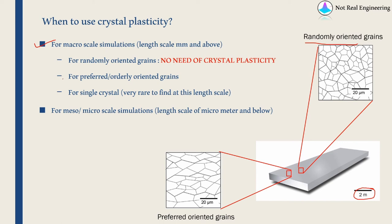Crystal plasticity is needed only in specific cases — for example, if grains are preferentially or orderly oriented (like elongated in one direction), making the slab's response direction-dependent. It may also be needed for single crystals, which can now be manufactured in millimeter scale in pure metals. But most of the time crystal plasticity is used for meso or micro scale simulations, in the orders of micrometers or less.